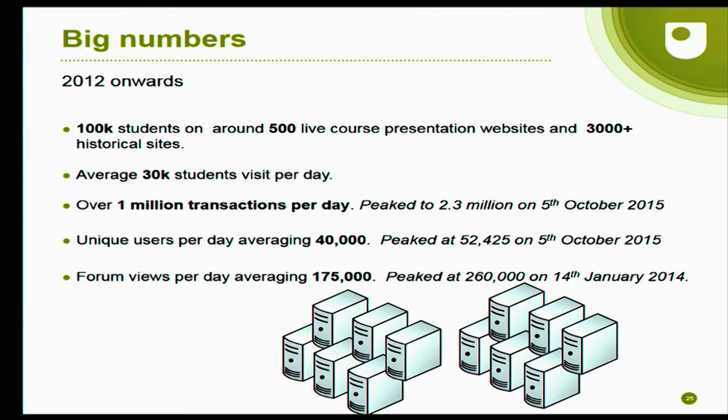By the time we moved to Moodle 2, we had five web servers, a Postgres database, and one file store. We tend to find it's the web servers you need to keep adding. Where are we now? We've just upgraded all of our web servers to Red Hat 7 and moved from 8 to 12 web servers — and that's just for the one Moodle that runs the course presentation websites. Each of the other Moodles has maybe two or four web servers of their own, depending on their traffic levels. October is a peak period when the majority of our courses open, so that's when we always see the highest levels of traffic throughout the year.